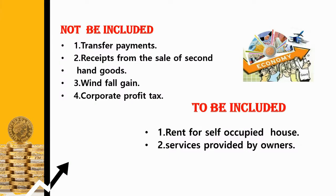Now let's discuss the items to be included and not included under the income method. Transfer payments should not be included in the estimation of national income, because these payments are not received for any service provided in the current year — such as pensions, social insurance, scholarships, etc. These should not be included while calculating national income.